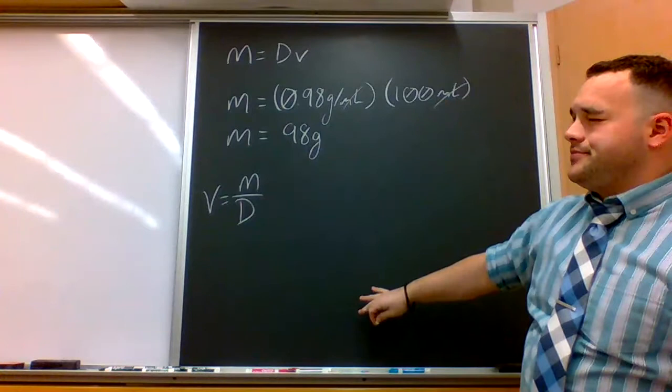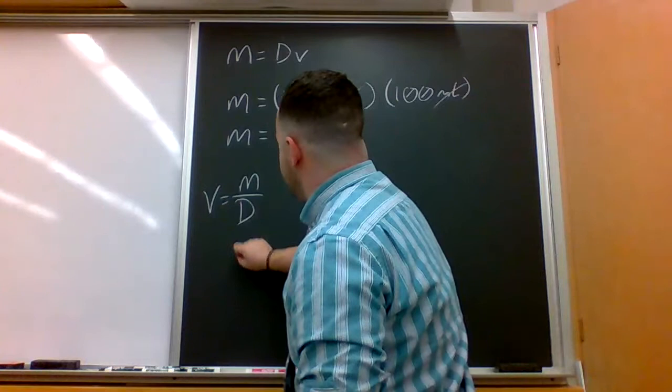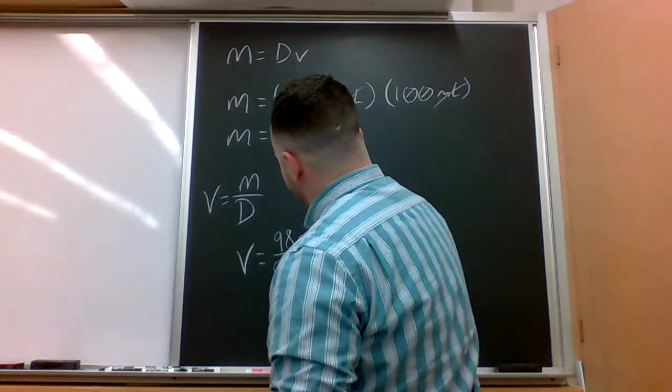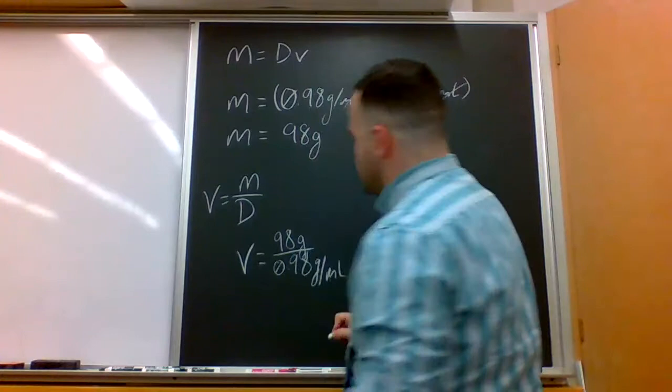And if we use the same piece of wood as before, we'll find that volume equals 98 grams divided by 0.98 grams per milliliter.